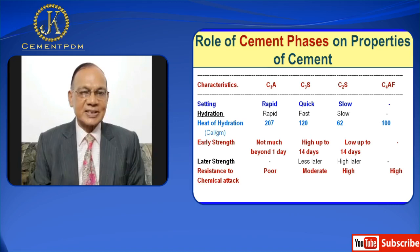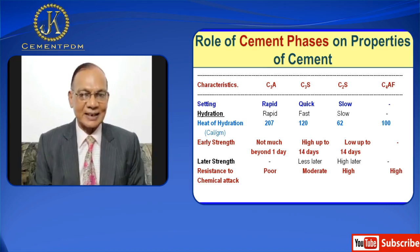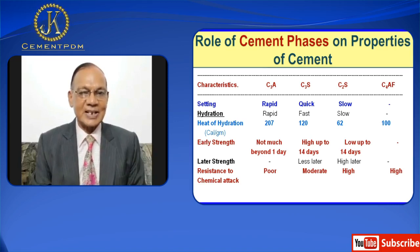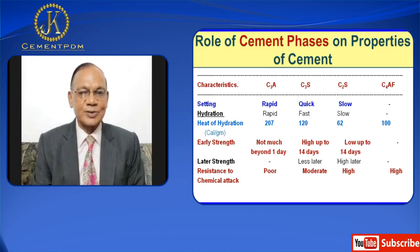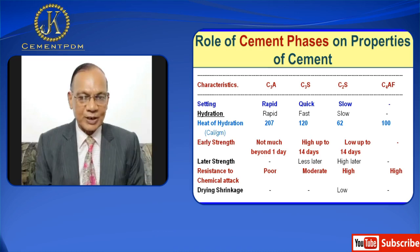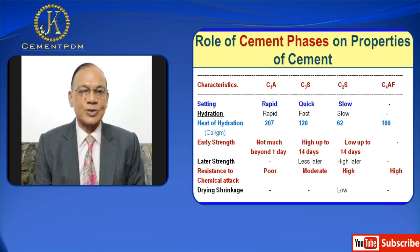C3A has poor resistance to chemical attack. C3S has moderate resistance to chemical attack while both C2S and C4AF have high resistance to chemical attack.